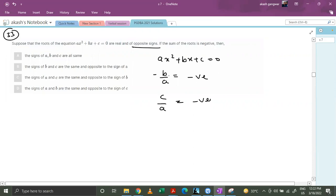Case 1 says either b and a both should be positive, so this entire expression becomes negative. So b is positive and a is positive. This is the first case.